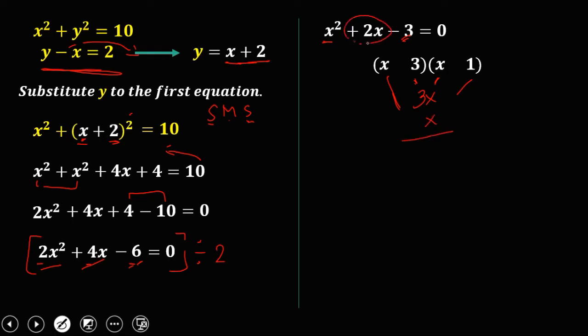Now take note that the middle term is positive 2x. So to have a sum of positive 2x, so this x is negative because 3x minus x, this one is positive 2x. So therefore, 3 is positive and 1 is negative.